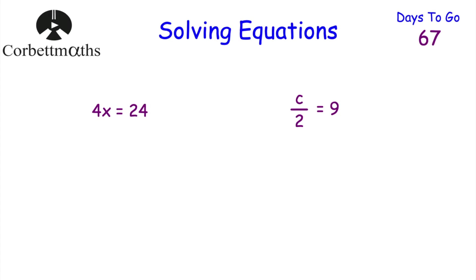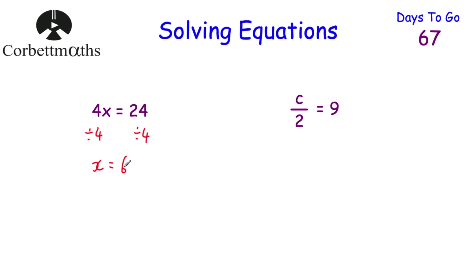This time we've got 4X equals 24, and C over 2 equals 9. Press pause and try these two questions. For 4X equals 24, we want to get X on its own so we divide by 4 on both sides. 4X divided by 4 is just X, and 24 divided by 4 is 6. So X equals 6. We can check: 4 times 6 is 24. Fantastic.